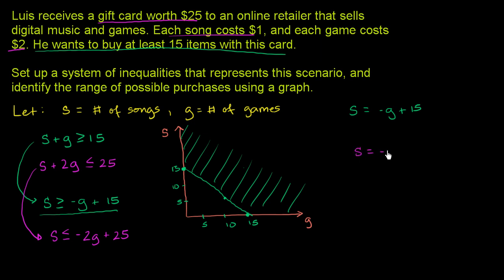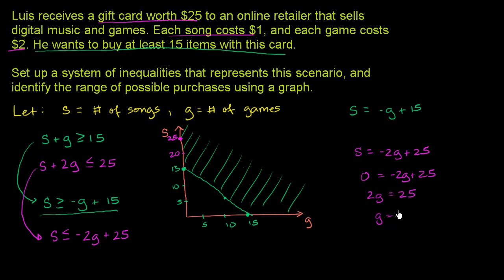Now the second constraint: the boundary line is s equals negative 2g plus 25. If g equals 0, s equals 25 — so the s-intercept is 25. If s equals 0, we get 0 equals negative 2g plus 25, so 2g equals 25, meaning g equals 12 and a half. So the g-intercept is 12.5. Since it's less than or equal to, we include the boundary line and draw a solid line through those two intercepts.